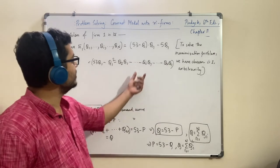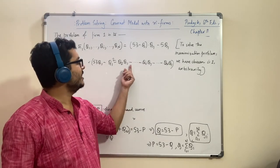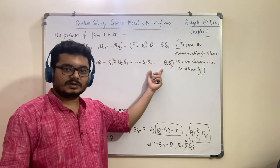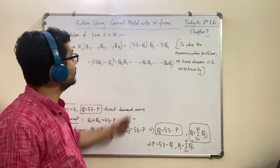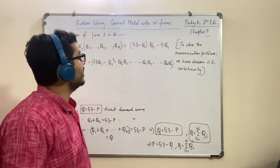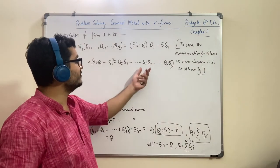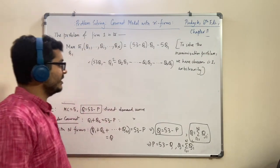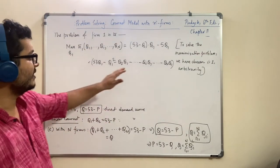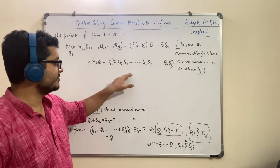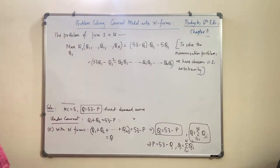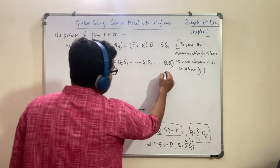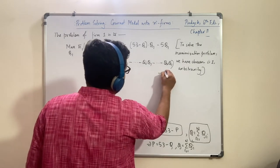So the profit of each firm will be 48 into (something) into (N + 48) into 53, divided by (N+1) squared. If you are interested you can solve it by yourself. Now we will move on to the interesting part of the result — as N increases, as there is an increase in N, this P star will reach the perfectly competitive level.